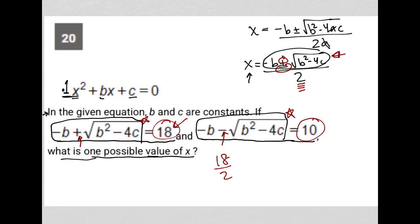Let me write it this way: x = (-b ± √(b² - 4c)) / 2, which can be split into x = (-b + √(b² - 4c)) / 2 and x = (-b - √(b² - 4c)) / 2.